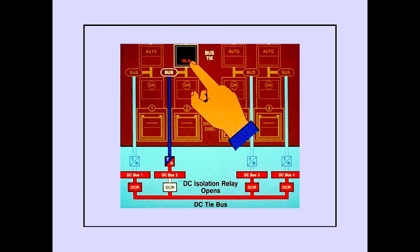In addition to opening the bus tie breaker, pushing the bus tie switch off opens the respective DC isolation relay. The DC bus is isolated from the DC tie bus, but remains powered by its respective AC bus and transformer rectifier.